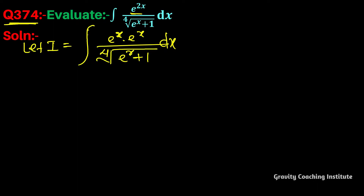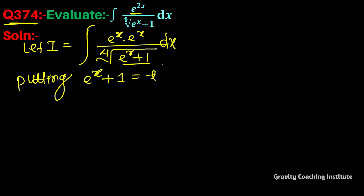We will solve by substitution. Putting e to the power x plus 1 equal to t to the power 4, because this is a fourth root, so taking t to the power 4 will make it easier to solve. Now differentiate with respect to t.